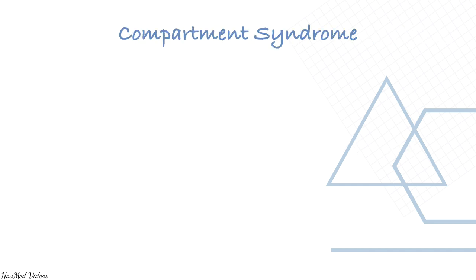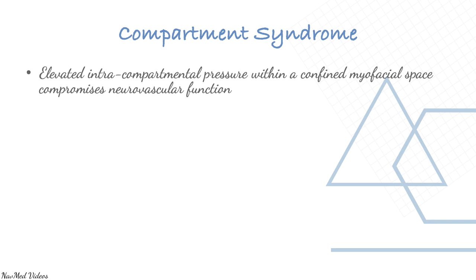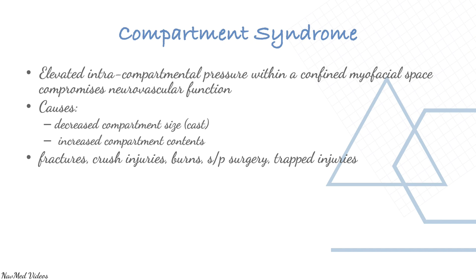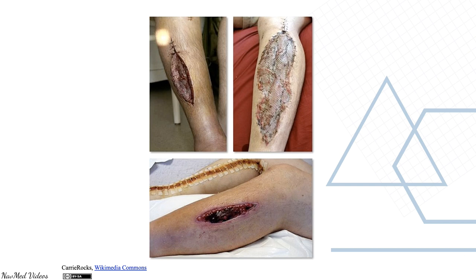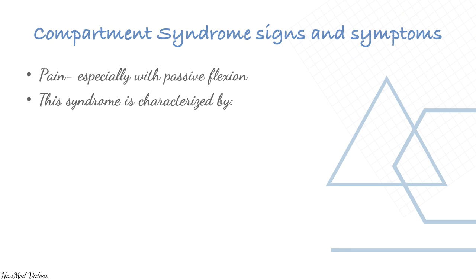Compartment syndrome is the most dreaded musculoskeletal emergency. It is characterized by elevated intracompartmental pressure within a confined myofascial space, which compromises neurovascular function. Causes include decreased compartment size (as in casts) or increased compartmental contents such as fractures, crush injuries, bones, surgeries, or trapped injuries. It usually develops 6 to 12 hours after injury and requires a fasciotomy. Signs and symptoms include pain, especially with passive flexion.